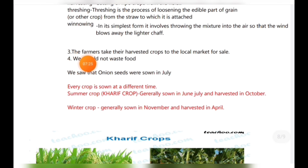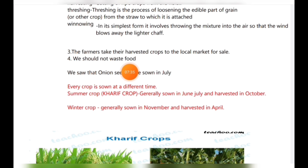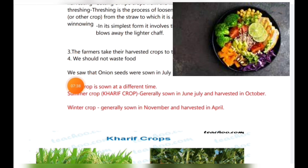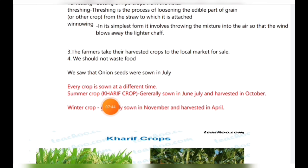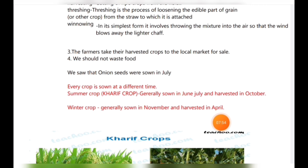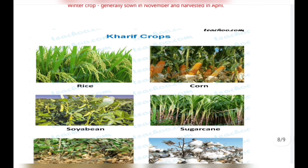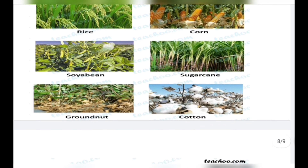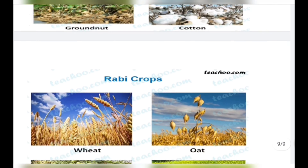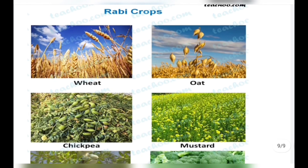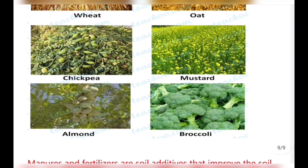Farmers take their harvested crop to the local market for sale. We should not waste water, and since so many steps go into growing food, we should never waste food. Onion seeds were sown in July. Every crop is sown at a different time. Summer crops are called Kharif crops, generally sown in June–July and harvested in October. Winter crops (Rabi crops) are generally sown in November and harvested in April. Kharif crops include rice, corn, soya beans, sugarcane, groundnut, and cotton. Rabi crops include wheat, oat, chickpea, mustard, almond, and broccoli.